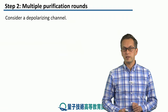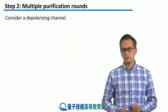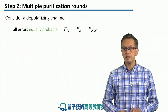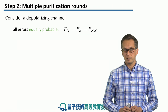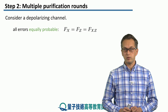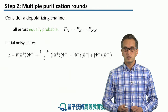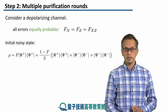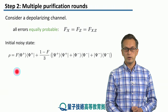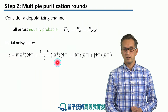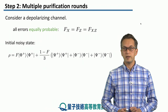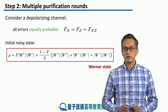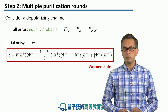The channel we're going to consider is a depolarizing channel. This means that the probability of the errors for x, z, or both errors is fixed to be the same, just to simplify our calculation a little bit. So our initial noisy state has fidelity F with our Bell pair, and each error can occur with probability (1 - F) / 3. This particular state has its own special name: the Werner state.